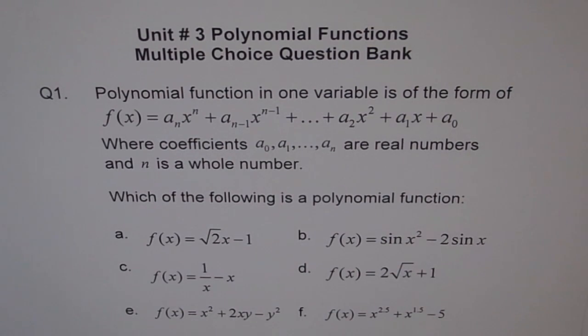Option a: f(x) = √2x - 1. Is it a polynomial function? Well, √2 is a coefficient of x, and the degree of x is 1. So the degree is a whole number and the coefficient is a real number. The -1 is a constant, the coefficient of x⁰. So a is a polynomial.